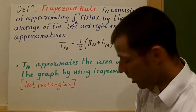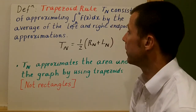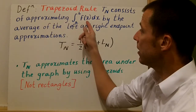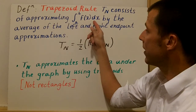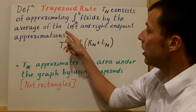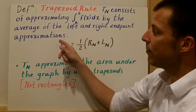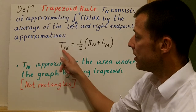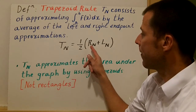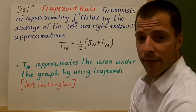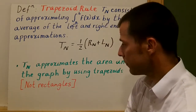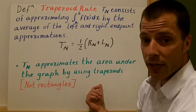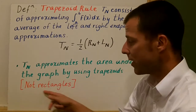When we talk about the trapezoid rule, T sub n consists of approximating the integral of f of x dx by the average of the left and right endpoint approximations. Basically, T sub n is equal to one half times the right endpoint plus the left endpoint. T sub n approximates the area under the graph by using trapezoids, not rectangles.